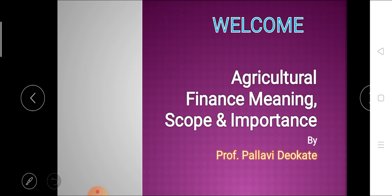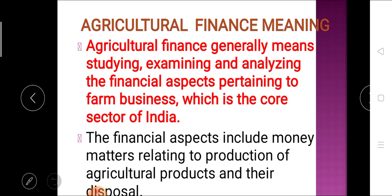So we will see one by one these different concepts. First of all, we see the agricultural finance meaning. Basically, agricultural finance is comprised of two words: agriculture and finance. Agriculture means growing of crops, rendering of livestock, or a piece of land. Whereas finance is nothing but the financial aspects of any farm business.